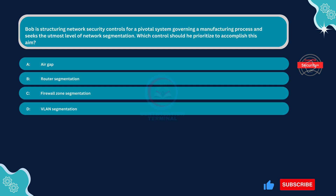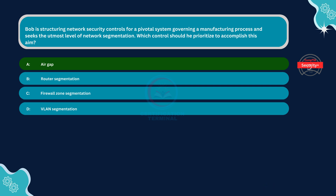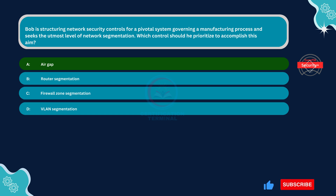The correct answer is Option A: Air gap. Air gapping involves physically isolating a system from any external networks, essentially creating a gap between the system and other networks. This is the most extreme form of network segmentation as it completely isolates the system from any potential external threats. For critical systems governing manufacturing processes, especially those with high security requirements, air gapping ensures the utmost level of protection by preventing any unauthorized access or communication.